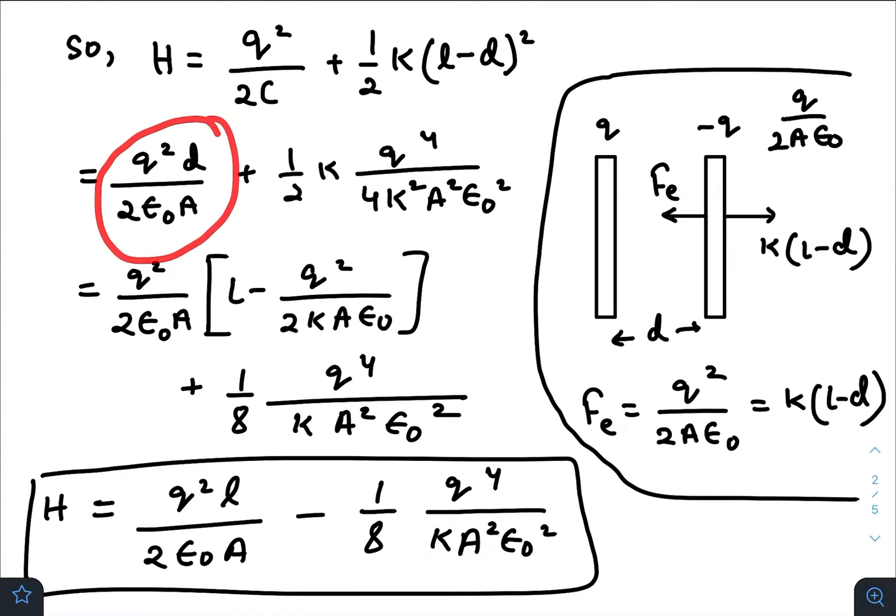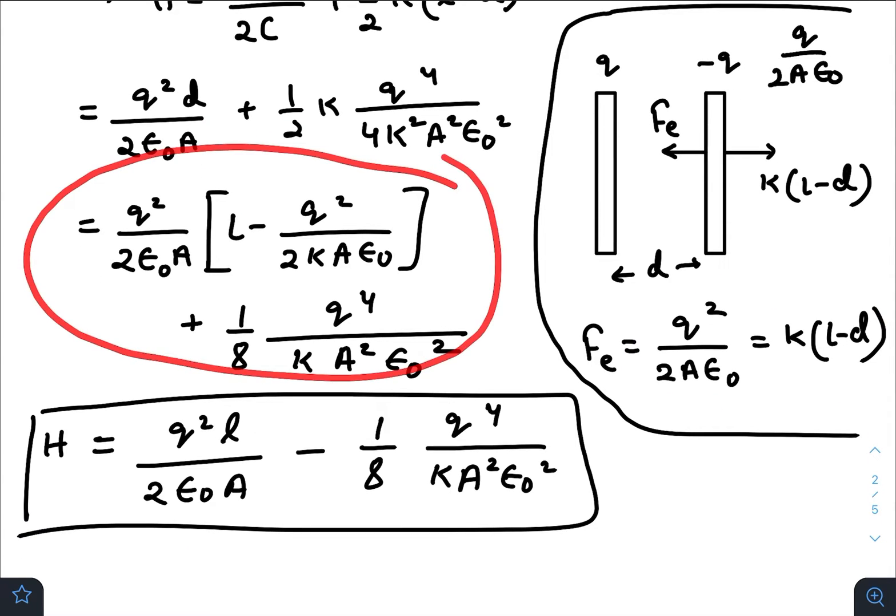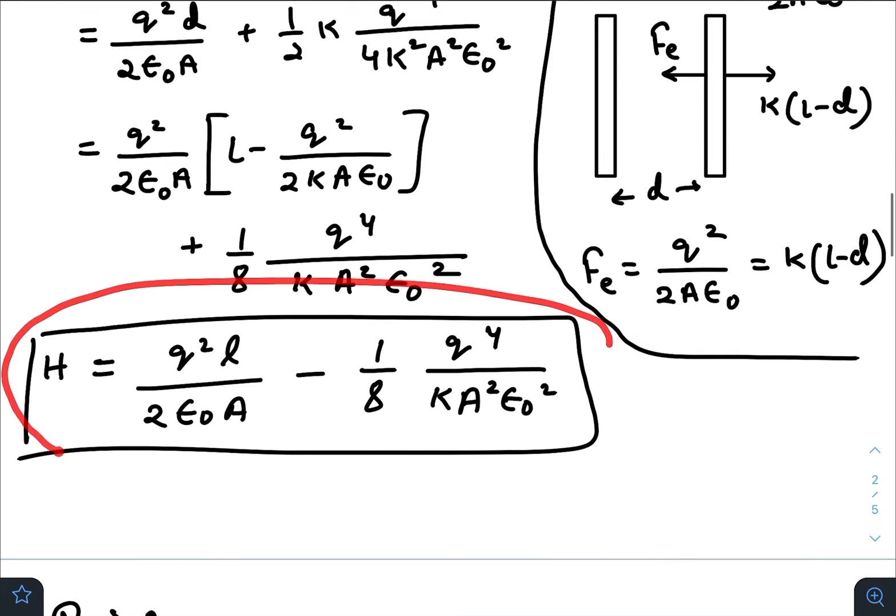Energy stored inside the capacitor plus energy stored inside the spring. So (L - D)² - we get (L - D) from here, that would be Q²/(2Aε₀K). Just put the value here, and we have the value of D. We will also get that from here; we will just replace it here. So simplifying this one, we get the heat loss in the first case equal to this. You can just do this simple calculation.